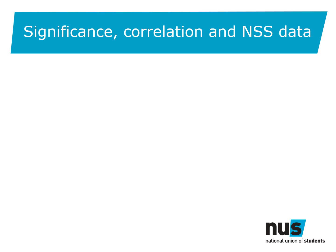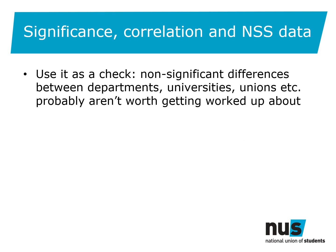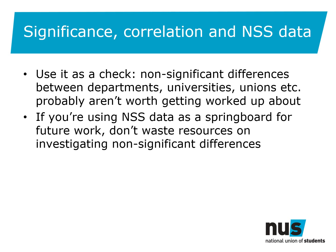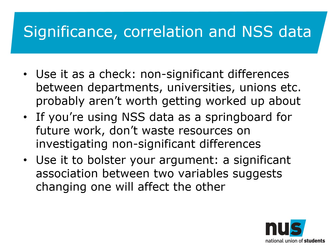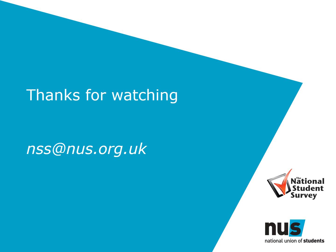So why are significance and correlation useful when looking at NSS data? You can use it to check that the differences you've highlighted are actually worth spending your time on — if a department has dropped one or two points since last year, is it actually a significant drop? Is dentistry doing so much better than medicine, or is it not statistically significant after all? Differences between two sets of data that aren't significant are probably not worth spending much time trying to fix. You can also use significance and correlation to bolster your argument — if you can demonstrate a significant association between two variables, it suggests that changing one will change the other. Thank you for watching. If you have any queries, please contact NSS at nus.org.uk.